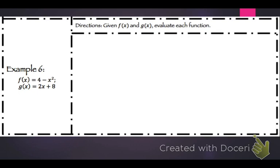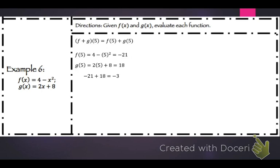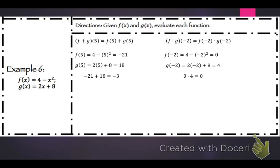Given f of x, evaluate each function. For f plus g of 5, that's f of 5 plus g of 5. Plugging 5 into f gives negative 21, and plugging 5 into g gives 18, so negative 21 plus 18 equals negative 3. For f times g of negative 2, that's f of negative 2 times g of negative 2. f of negative 2 is 0 and g of negative 2 is 4, so 0 times 4 is 0.